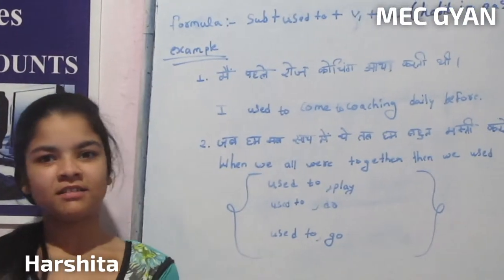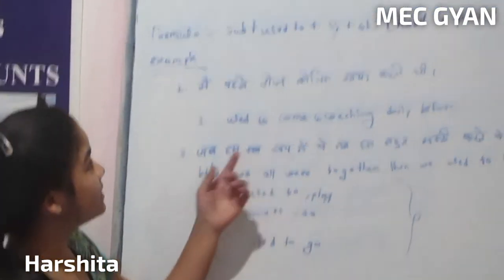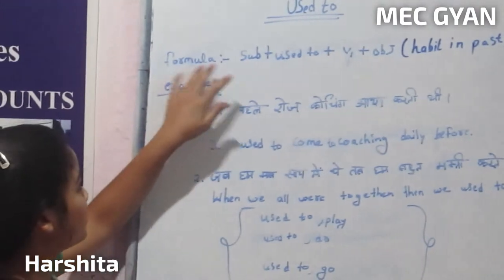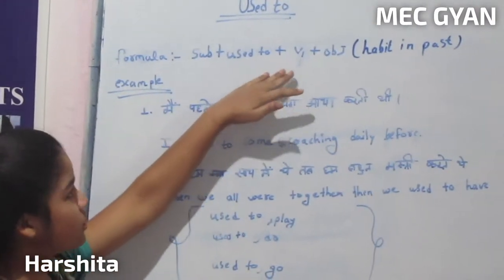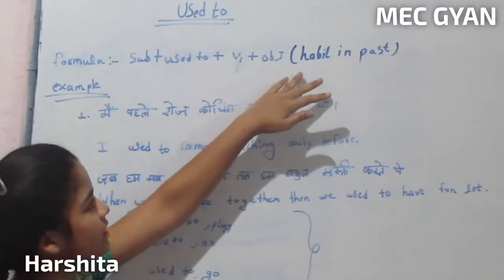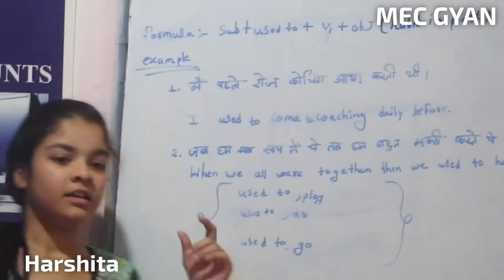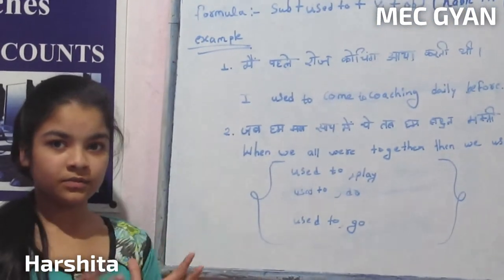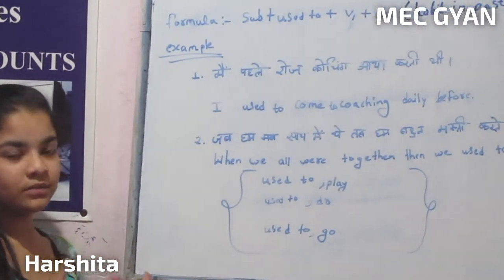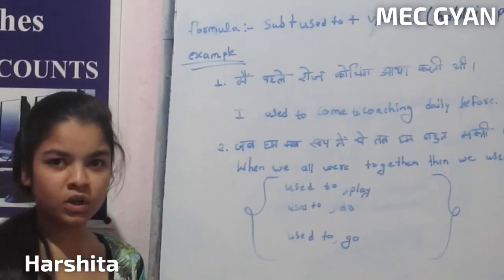Hello friends, you are watching MECN. Today we will learn the 'used to' formula: subject plus 'used to' plus verb plus object. This structure is used to describe a habit in the past — something we used to do but we can't do now or are not doing now.